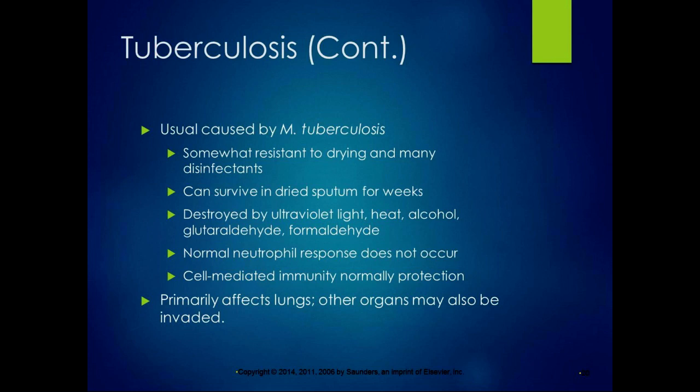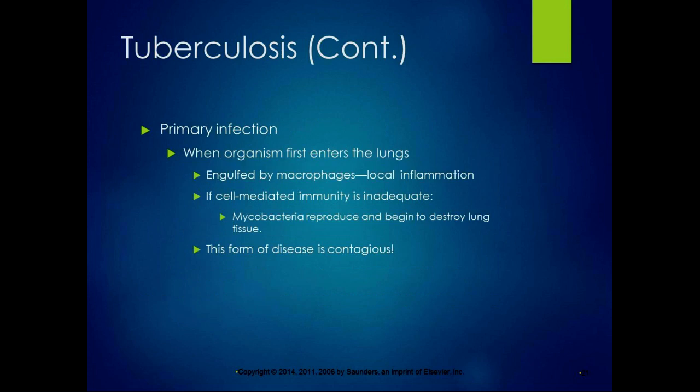In tuberculosis, the normal neutrophil response doesn't occur, and cell-mediated immunity is normally what protects you. TB primarily affects the lungs but can invade other organs. People in high-exposure areas may have an abnormal TB test simply because their immune system was exposed, but they were protected by normal immunity. It's people with compromised immune systems who have trouble. In the primary infection, when the organism first enters the lungs, it's engulfed by macrophages, producing a local inflammatory response. If cell-mediated immunity is inadequate, the bacteria reproduce and begin destroying lung tissue — and that form is very contagious.